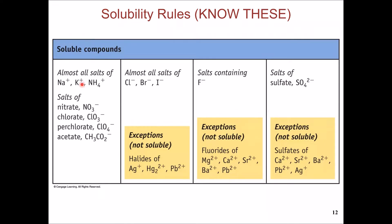The first rule is that group 1 salts and ammonium salts are always soluble, no matter what anion is combined with them. Also, salts of nitrate, chlorate, perchlorate, and acetate are always soluble no matter what cation is combined with them. The second rule is that salts of halides — meaning chloride, bromide, and iodide — are always soluble except if combined with specific ions, in which case they become insoluble. The third rule is that salts of fluoride are always soluble except if combined with a specific set of cations. Finally, salts of sulfate are always soluble except if combined with a specific set of cations, in which case they become insoluble.